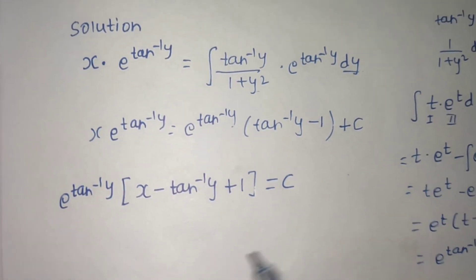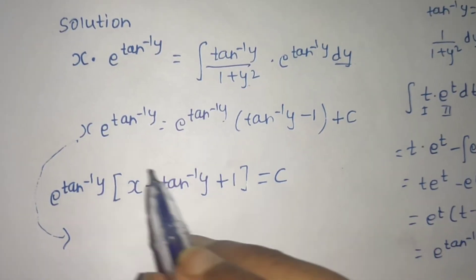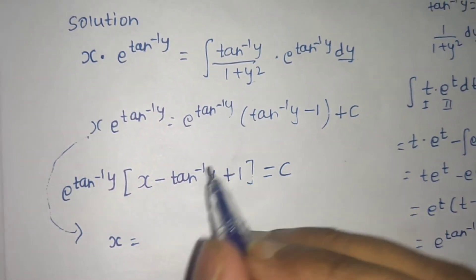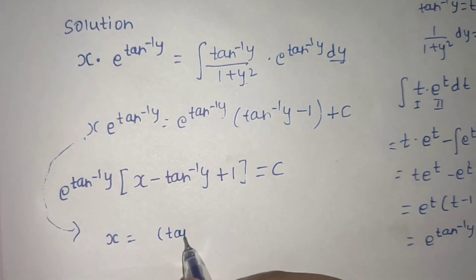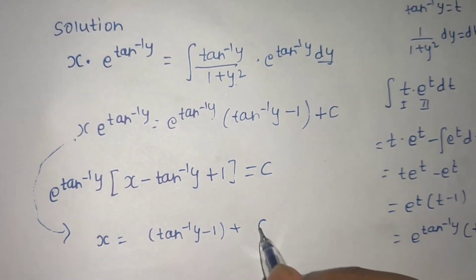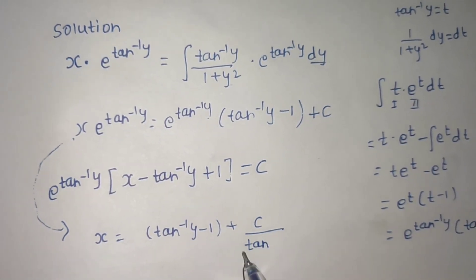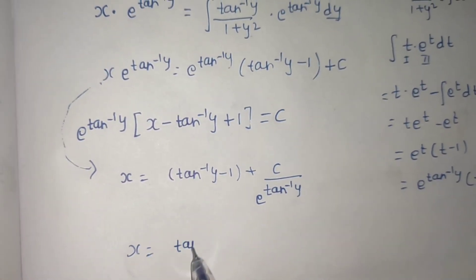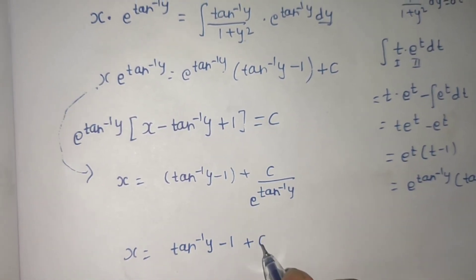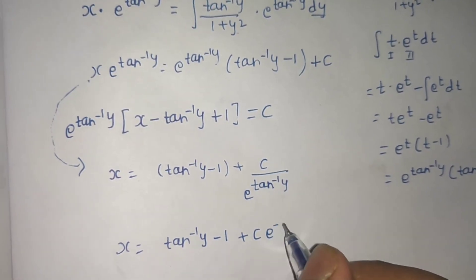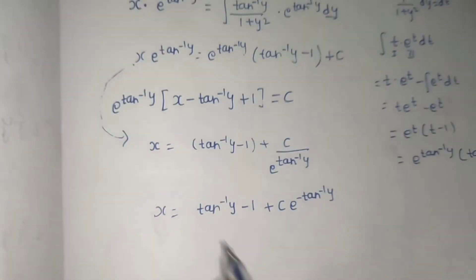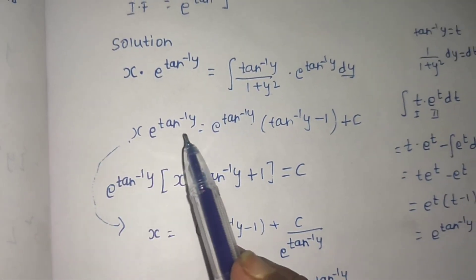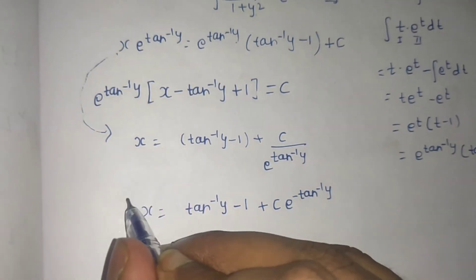Moreover, if you want to write the answer in the form of x explicitly, from the solution step divide throughout by e^(tan⁻¹y). You get x equals tan⁻¹y minus 1 plus C divided by e^(tan⁻¹y), which simplifies to x equals tan⁻¹y minus 1 plus C·e^(−tan⁻¹y). We just divided both sides by e^(tan⁻¹y) and got this as the final answer.